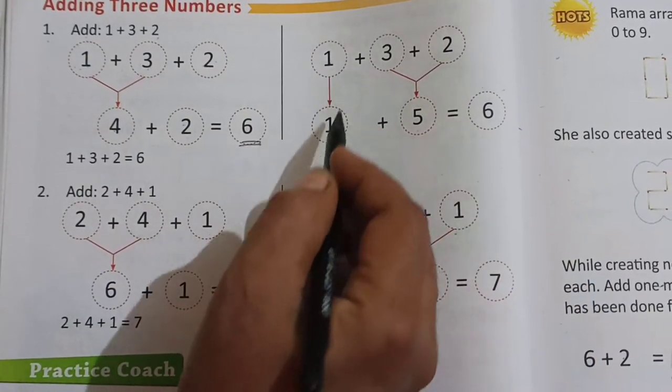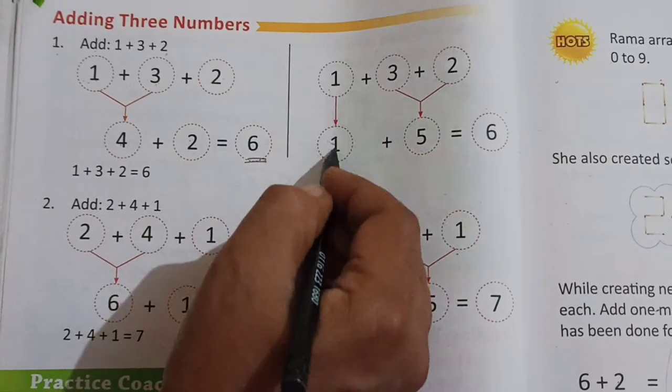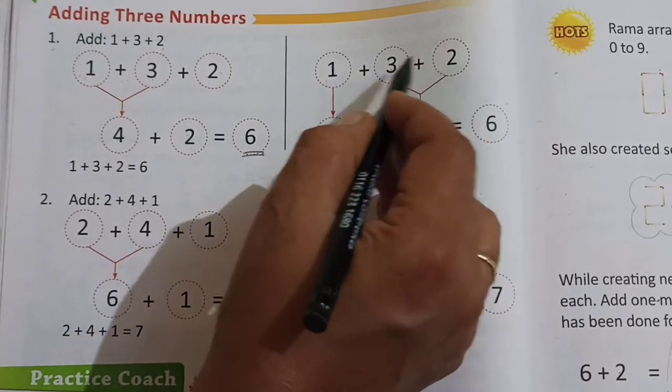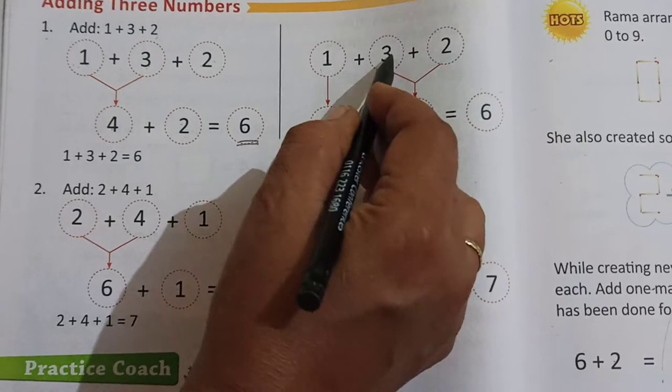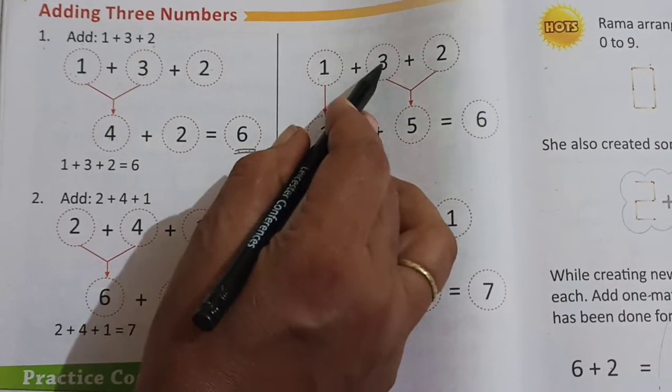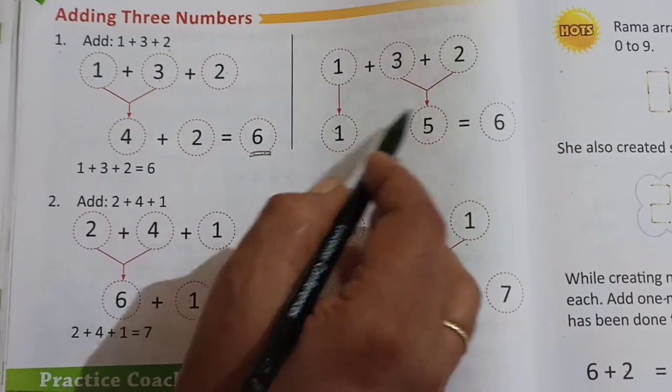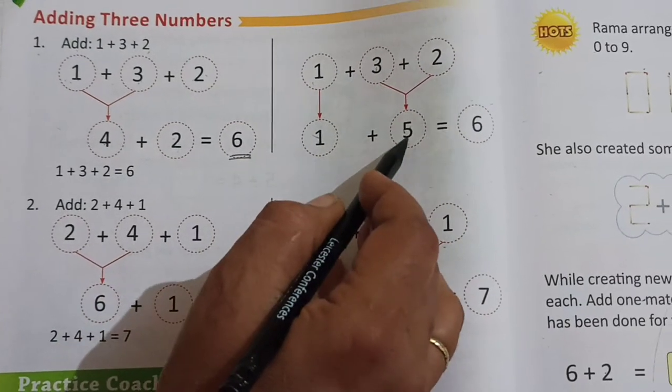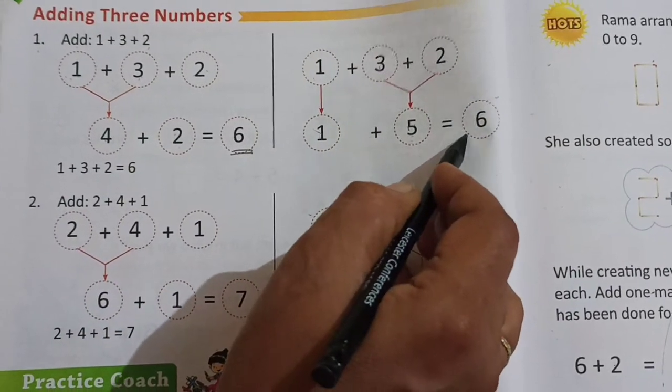Same like here. 1 as it is. And here in this example we add second and third number. 3 plus 2, 5. And then 1 plus 5 is equal to 6.